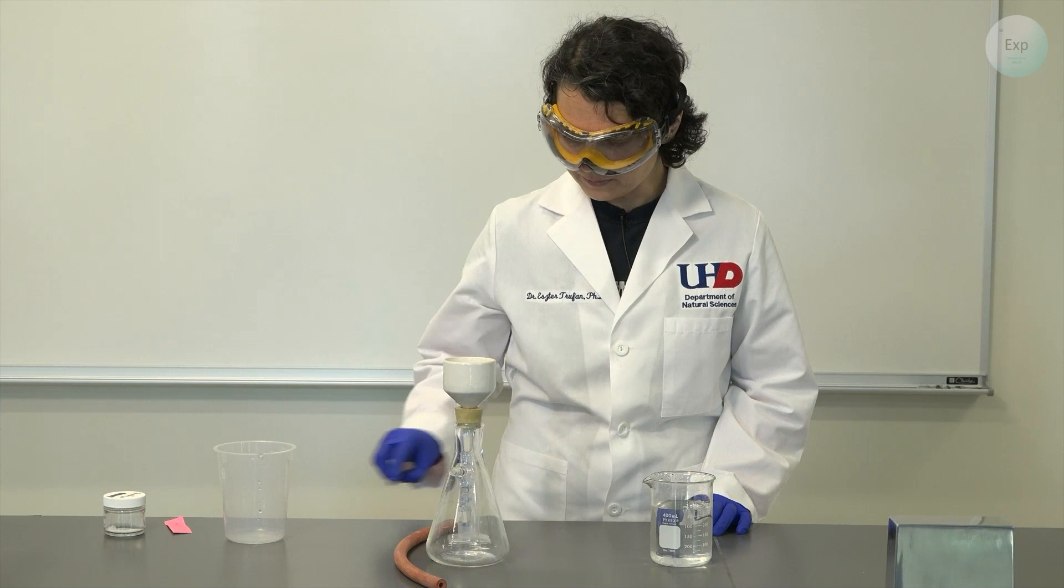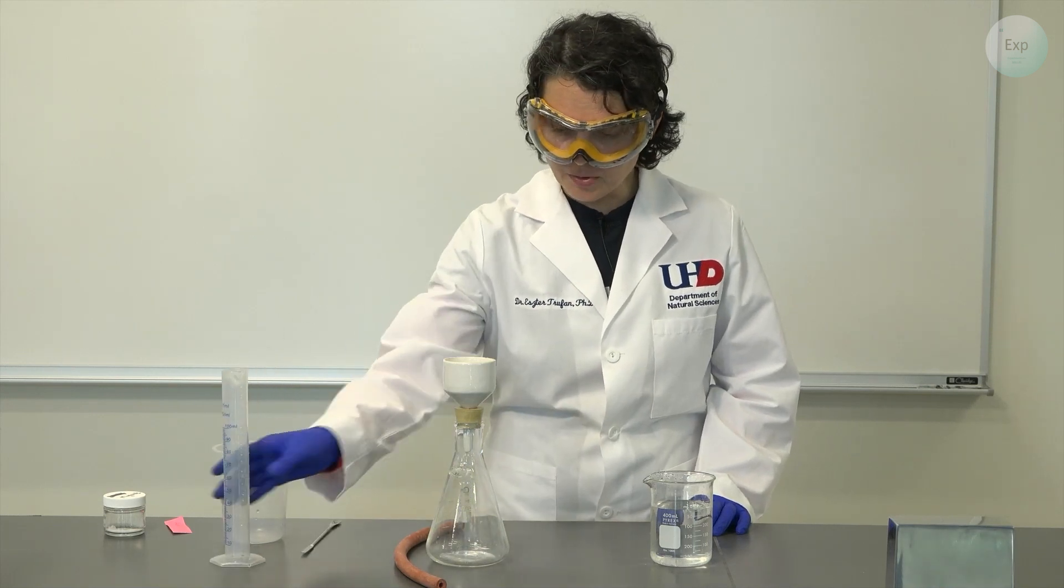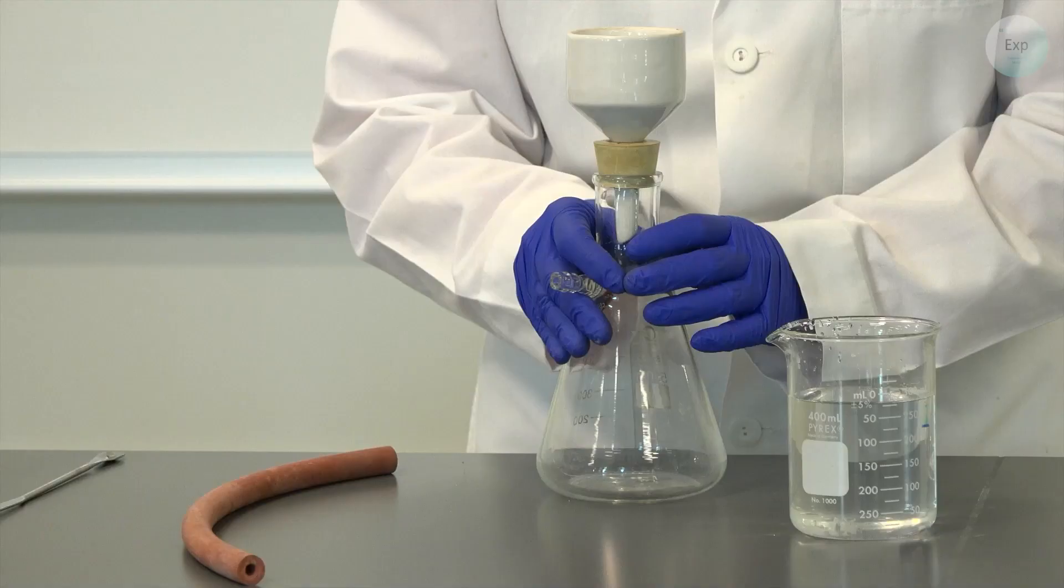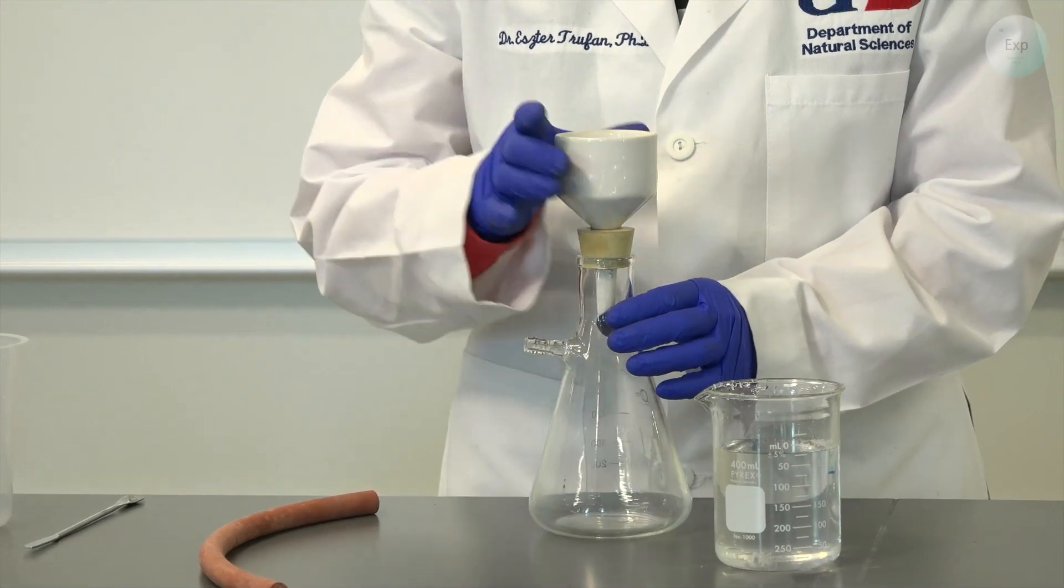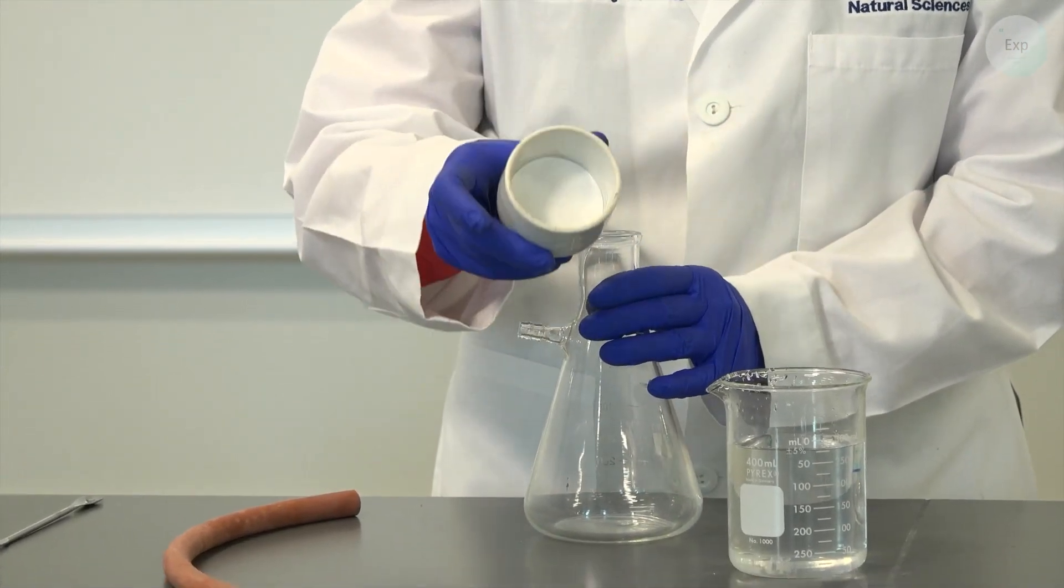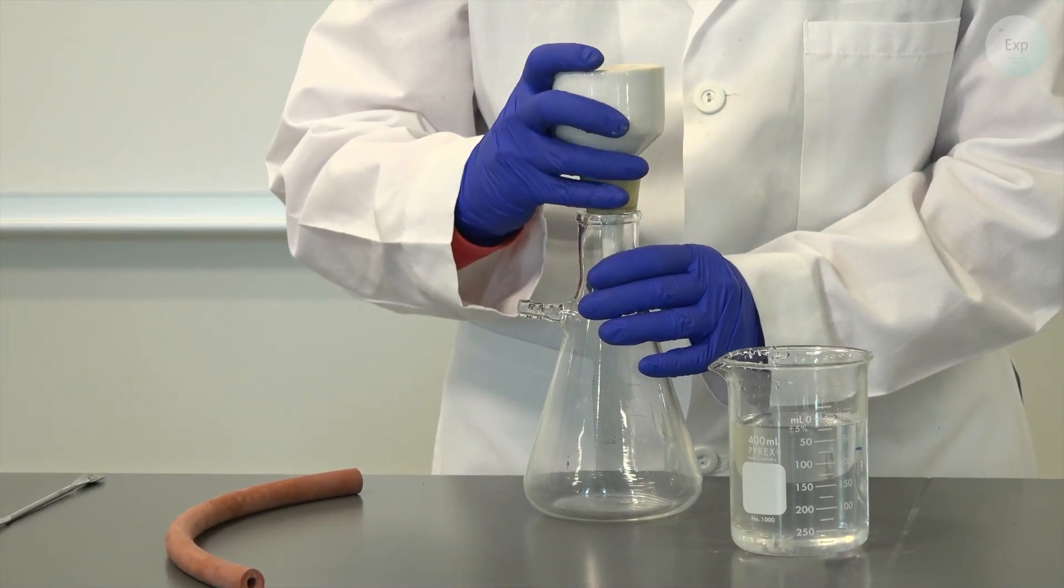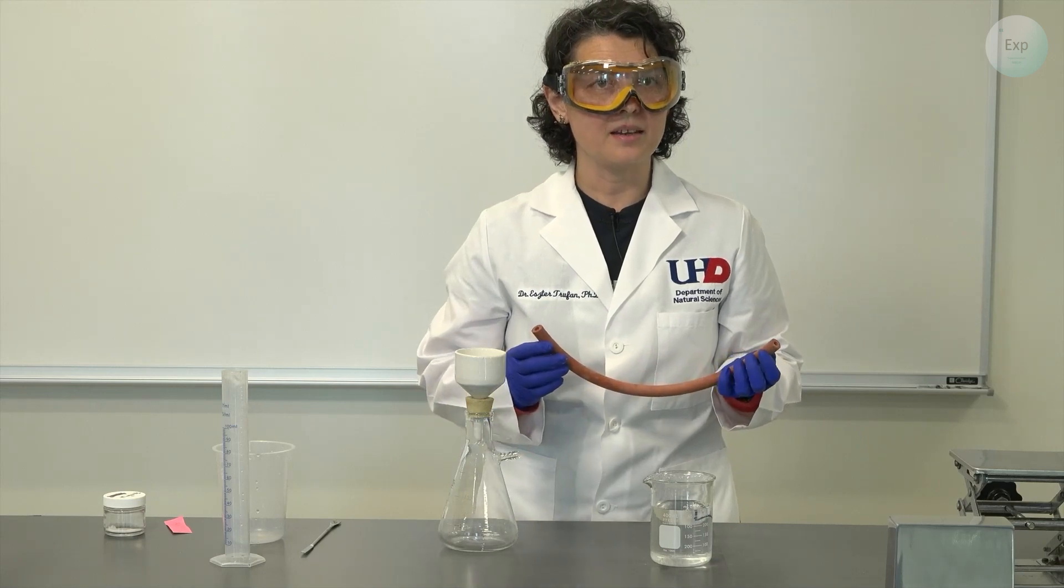So for that I'm going to use my Buchner filtration setup, the Buchner flask, the Buchner funnel and a filter paper that I placed on top of it. First I'm going to plug in my rubber hose into the vacuum port.